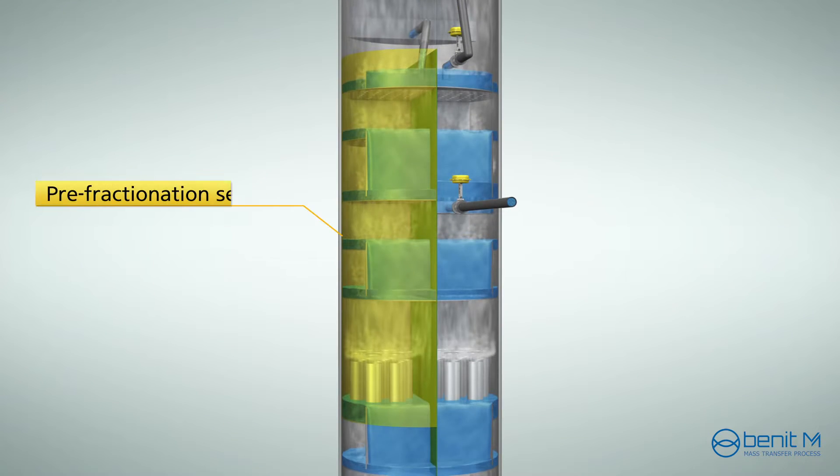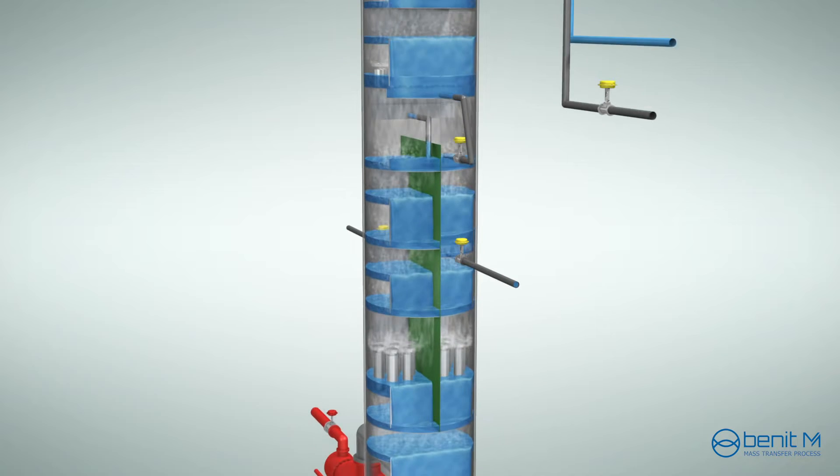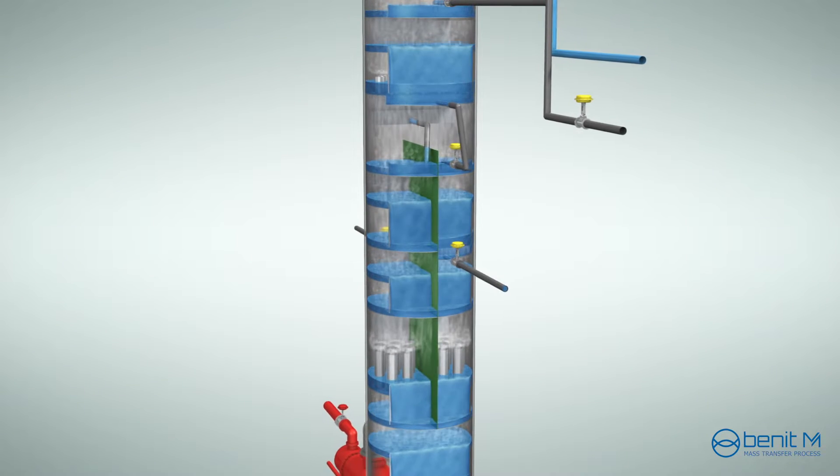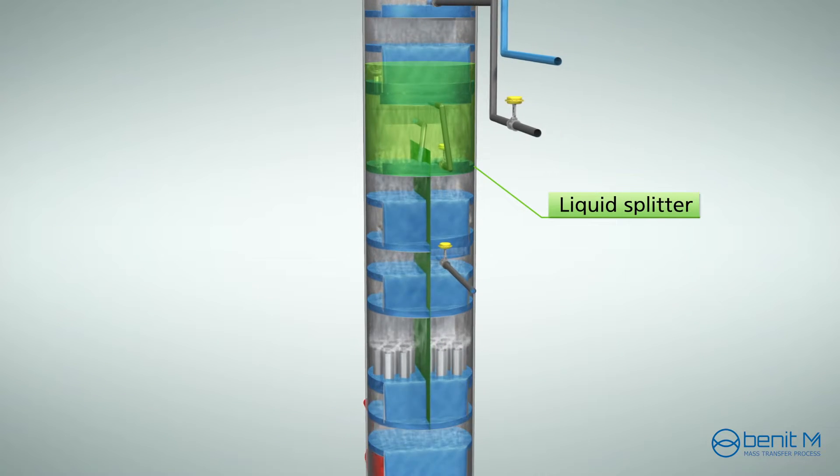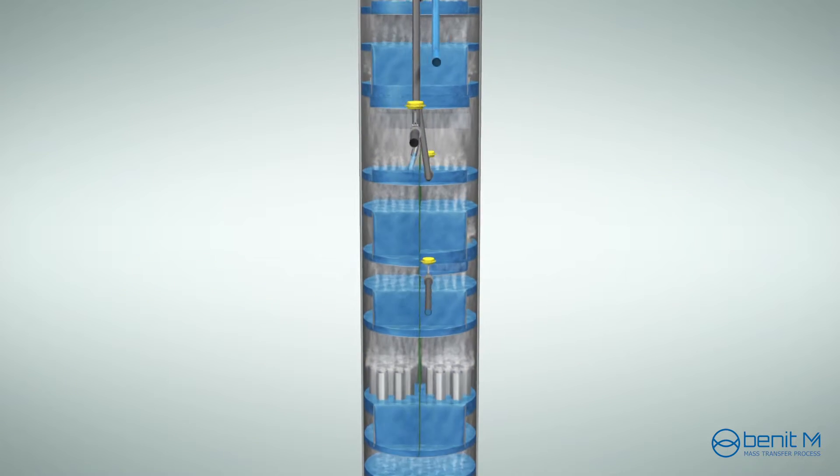Generally, there are pre-fractionation section and main fractionation section. Additionally, a dividing wall column needs a liquid splitter and a vapor splitter to distribute liquid and vapor properly to each section divided by the wall.